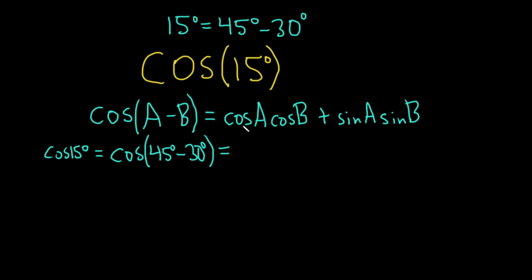That's equal to, so it's cosine A, cosine B, so our A is 45 and our B is 30. So this is cosine of 45 degrees, cosine of 30 degrees, plus sine of 45 degrees, sine of 30 degrees.